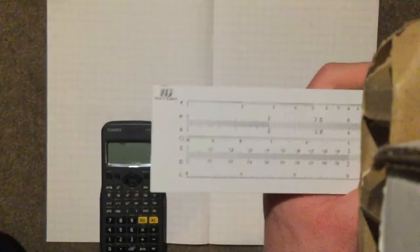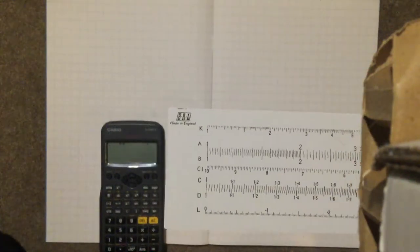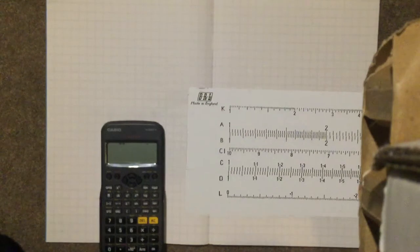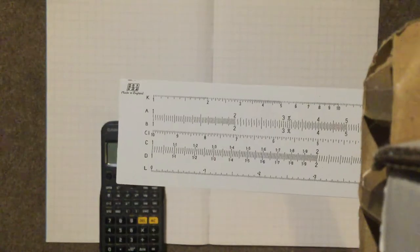Now speaking of the scales, this slide rule has K, A, B, C, I, C, D and L scales. Different slide rules can have different scales, but this is a K, A, B, C, I, C, D, L slide rule.